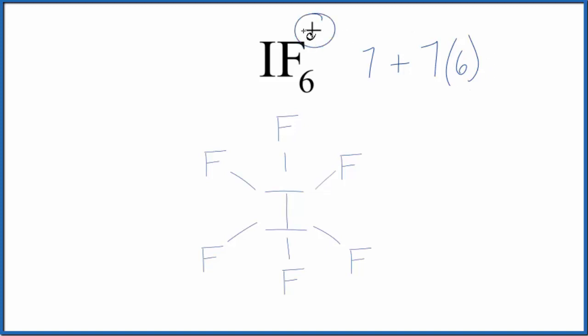And this positive up here means we've lost an electron, so we're going to subtract 1. When we do that, we end up with a total of 48 valence electrons for the IF6+ Lewis structure.